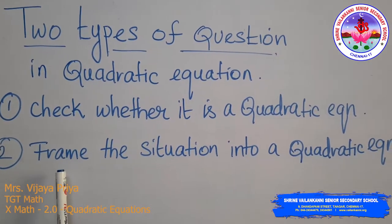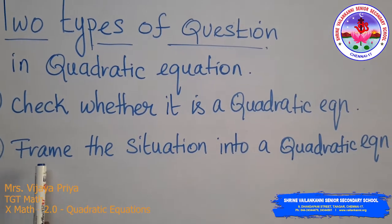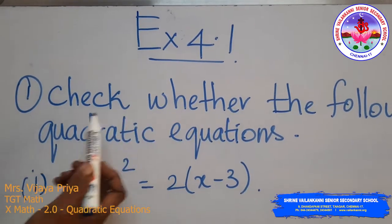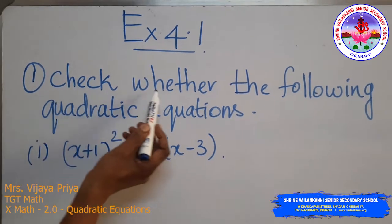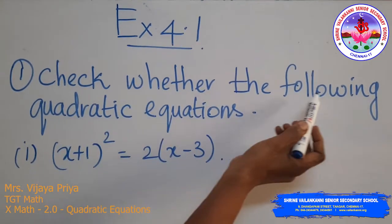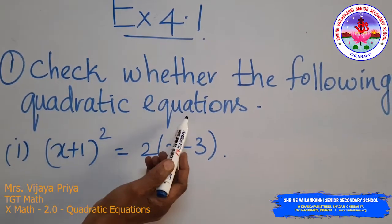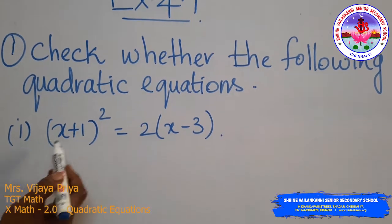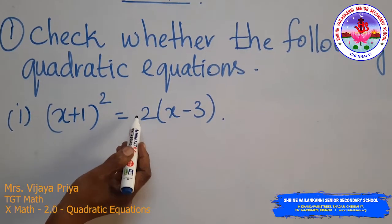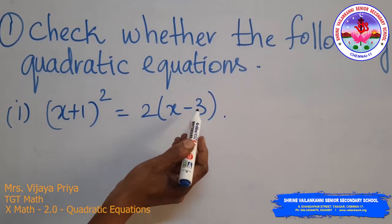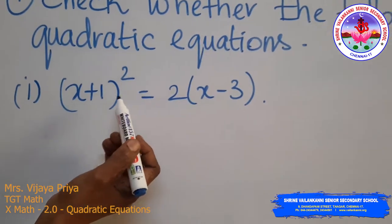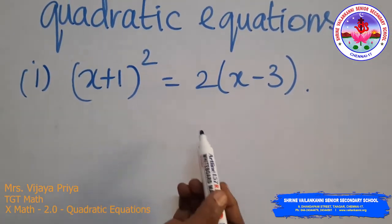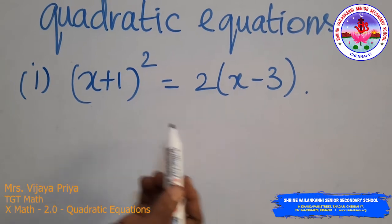Let us see Exercise 4.1. The first problem asks us to check whether the following are quadratic equations. Problem 1: (x + 1)² = 2(x − 3). We want to expand the LHS and RHS to determine whether it is in quadratic form.